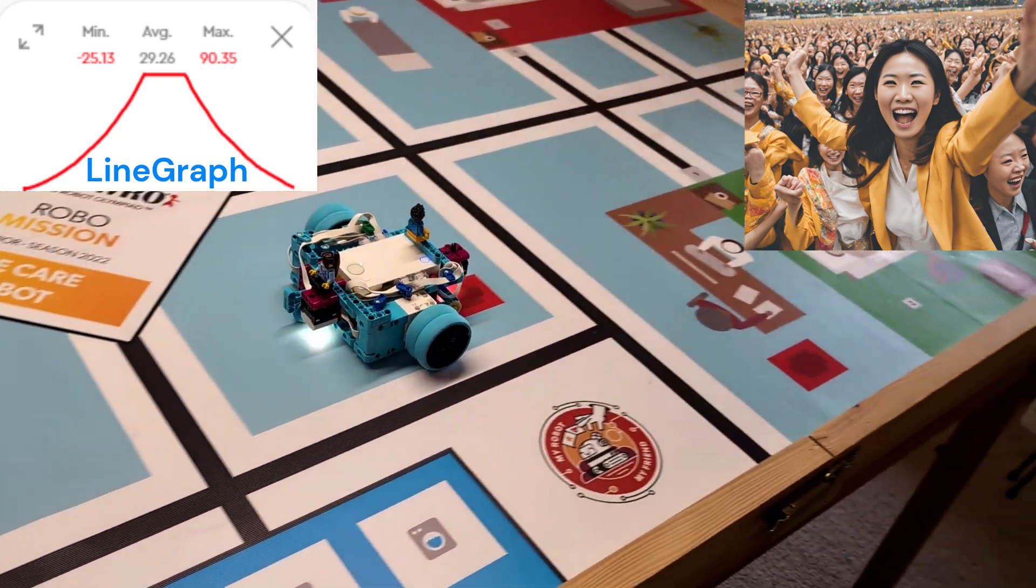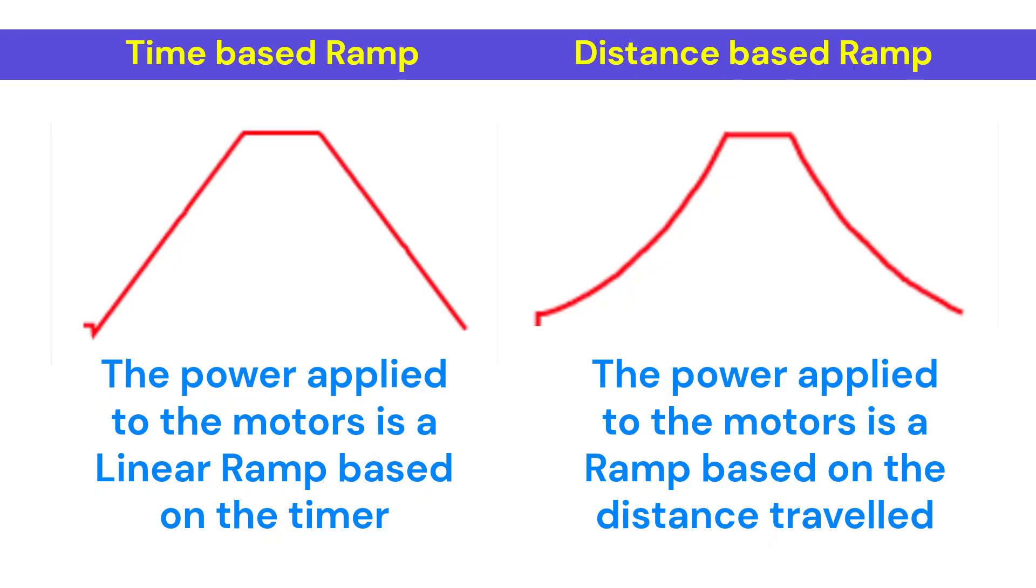Wow, look at that! The motor power ramps look different. The time-based ramp is linear as it directly follows the timer. The distance-based ramp follows the distance actually travelled. The slow start is caused by the inertia of the robot.